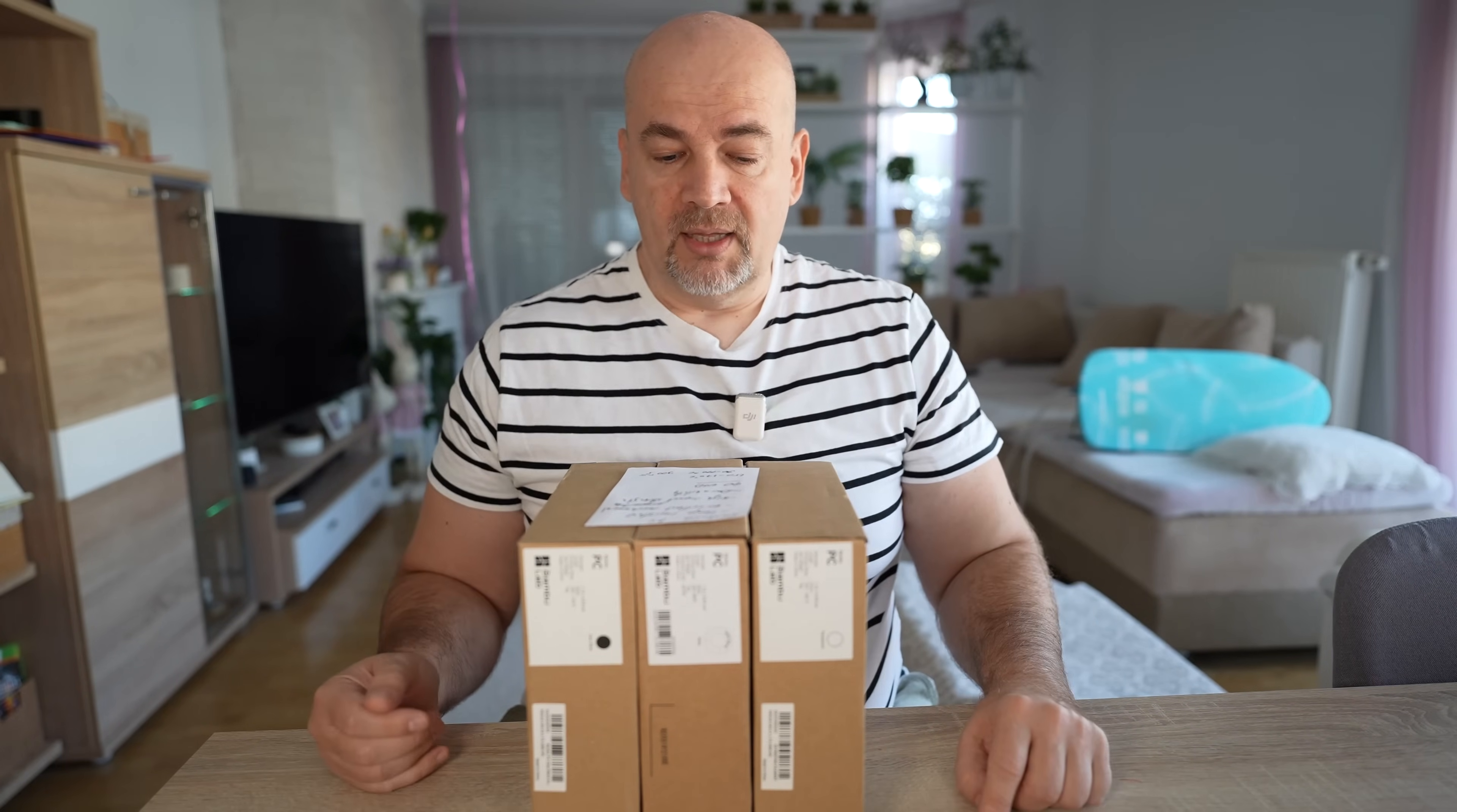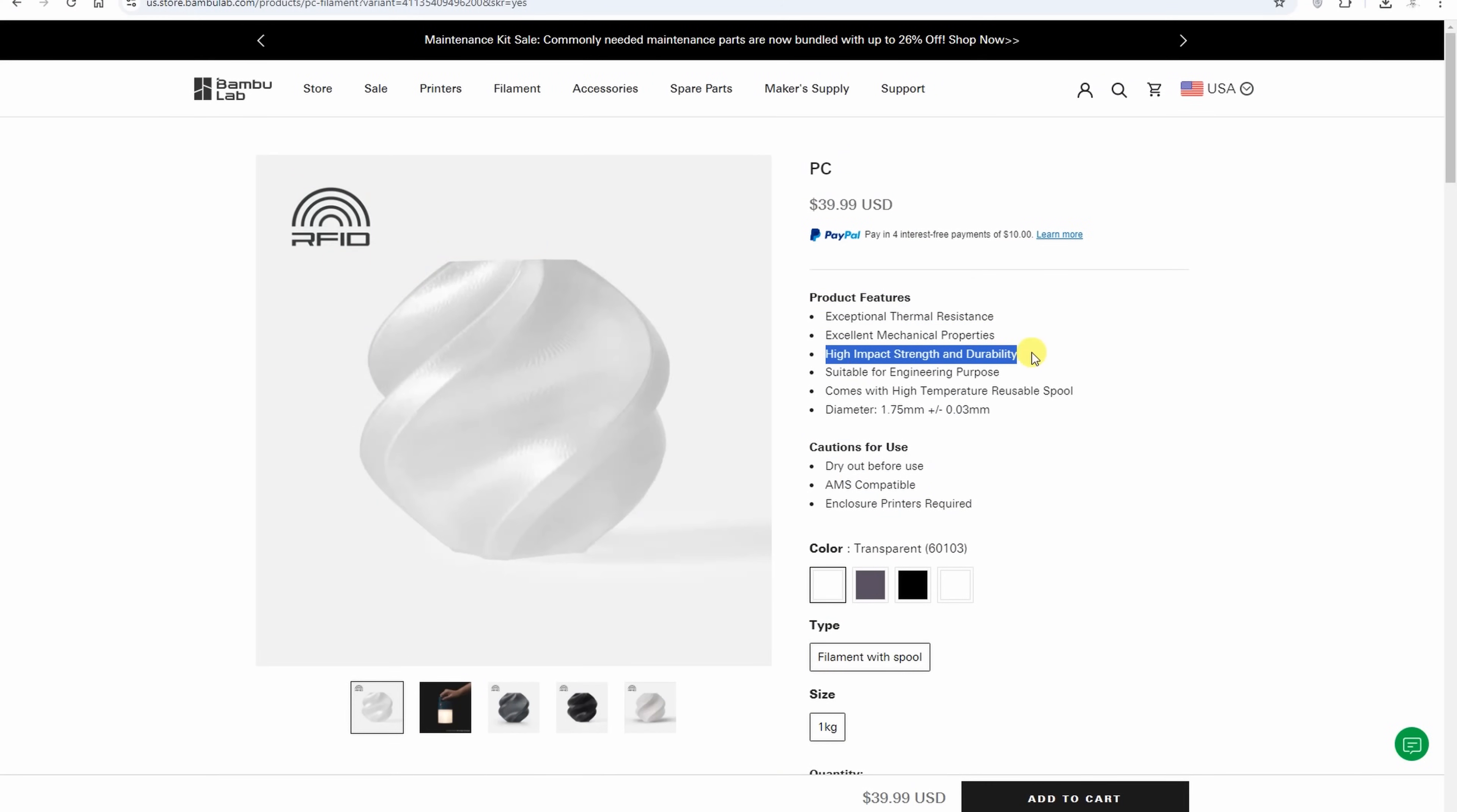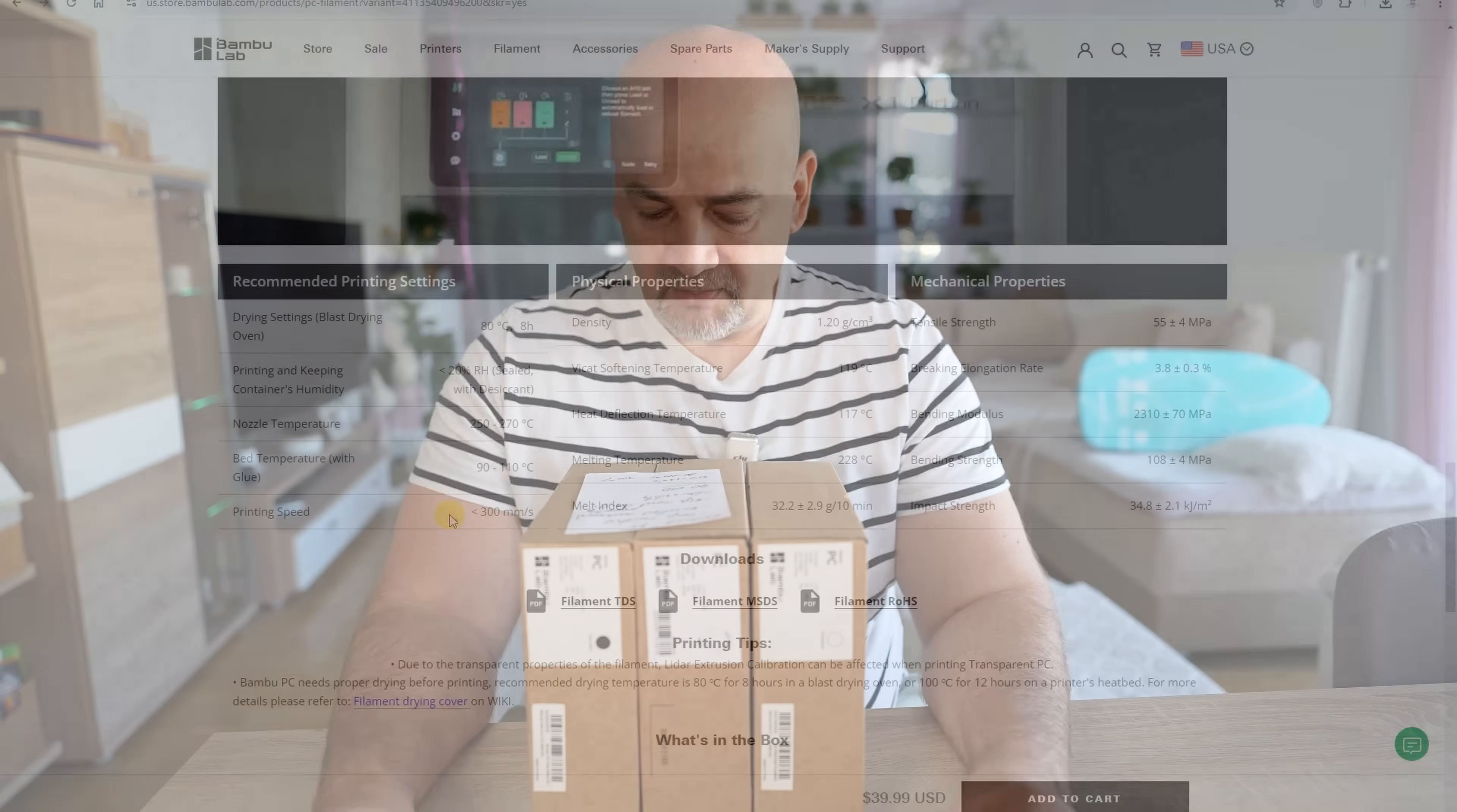About the polycarbonate, some main specifications. It is a temperature resistant material with excellent mechanical properties, high impact strength and durability. The price is around 40 dollars in the US and as I mentioned the print temperature varies on the box but I've used the different settings in Bambule studio.